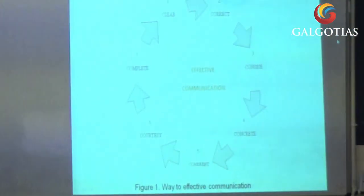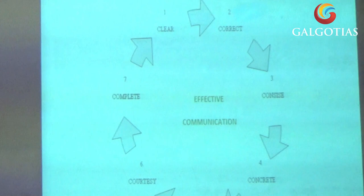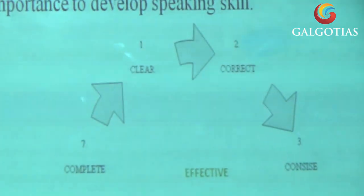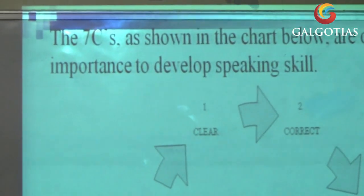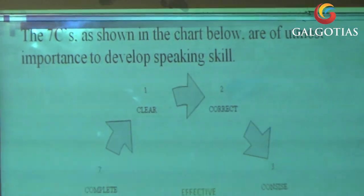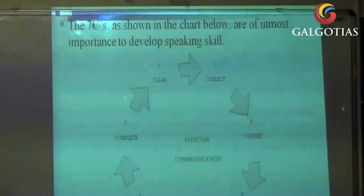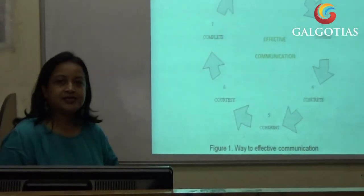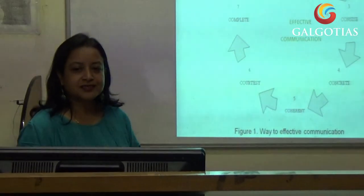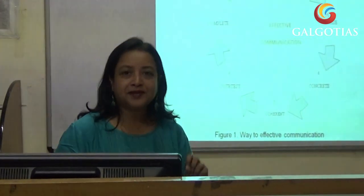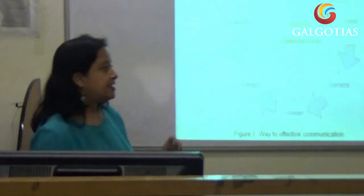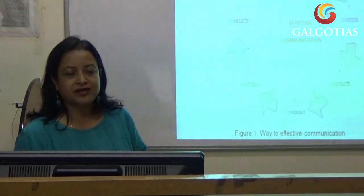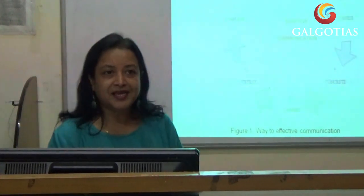These seven C's, as shown in the chart, help in developing communication skills. We must have these points in mind when we communicate. One: it should be clear; it should be correct; it should be concise; it should be concrete; coherent; it should be courteous; and the message you convey should be complete.